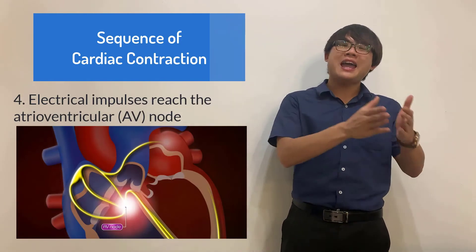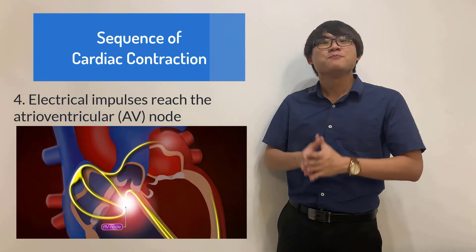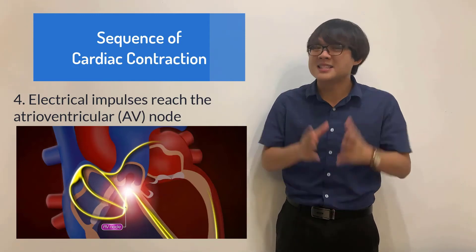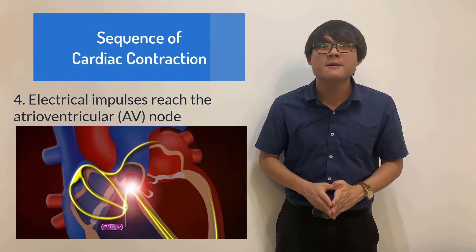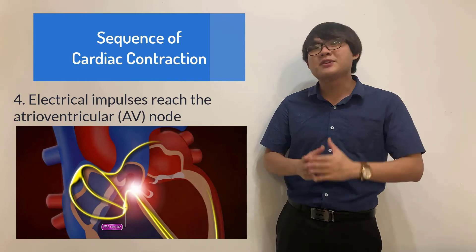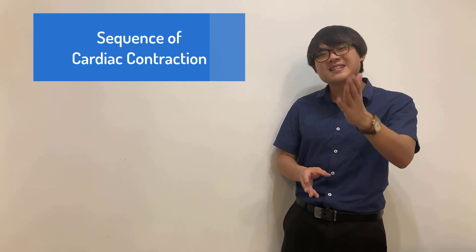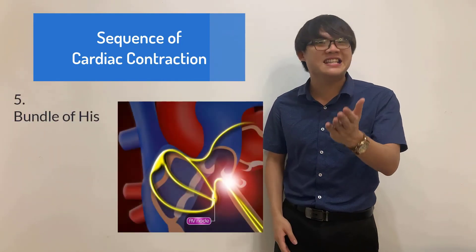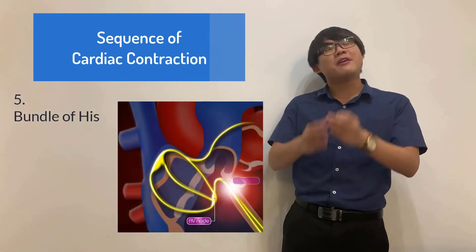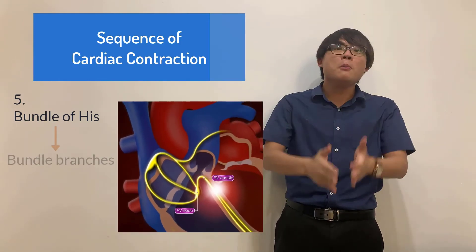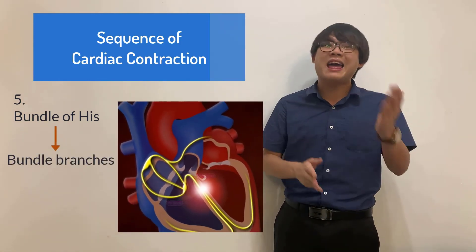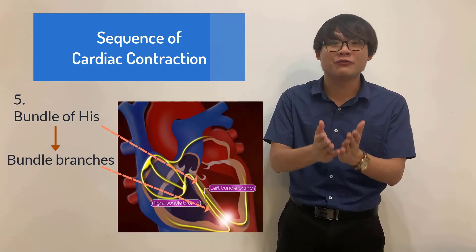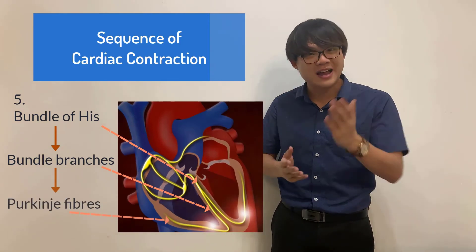So from the AV node, be careful over here because there are a few electrical transmitting bundles that you have to remember their names. And some students find it difficult to remember. But after some time, you get used to it. The first electrical transmitting fibers is called the bundle of his. After the bundle of his fibers, we will have two bundle branches. We have the left bundle branch and the right bundle branch. After reaching the apex of the heart, we have the Purkinje fibers.